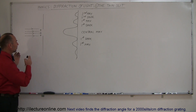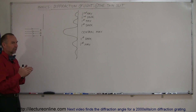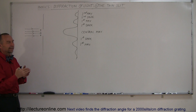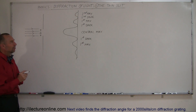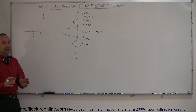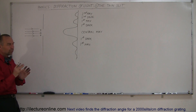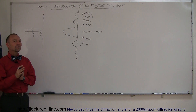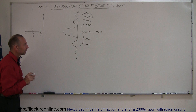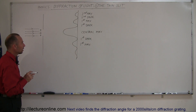But when we have a single slit, you might ask how can you have interference? And the answer is, not really — it's something slightly different. It's called diffraction of light, and we see what we call a diffraction pattern. There's still some sort of interference taking place here, but let me explain how that works.